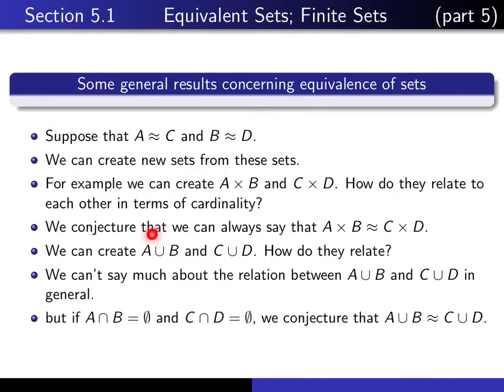But if A and B have no elements in common and C and D have no elements in common, then we probably should be willing to believe that the new unions will have the same cardinality. So that's a conjecture that we make. We've got two conjectures here, and we'll just simply try to prove those on the next slide.